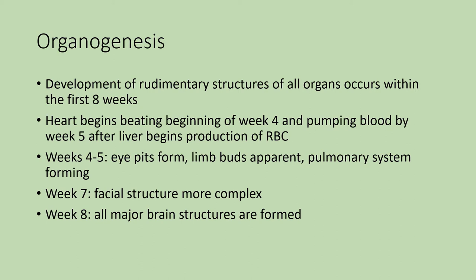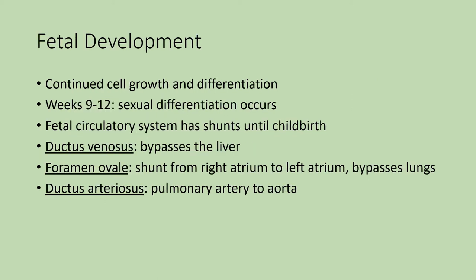By about weeks four or five, you can see the eye pits where the eyes are going to form, and buds where the limbs — arms and legs — will be. The pulmonary system is also starting to form. By week seven, all the facial structures are much more complex. By week eight, all the major brain structures are also formed. So by about the end of week eight or week nine, the basic structures are all there — they may not be fully functioning, but they are present.